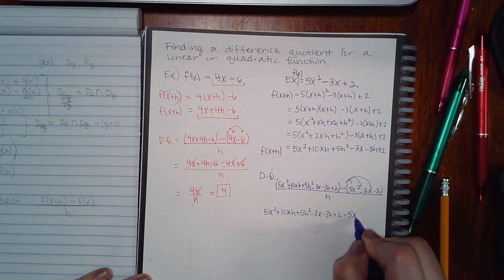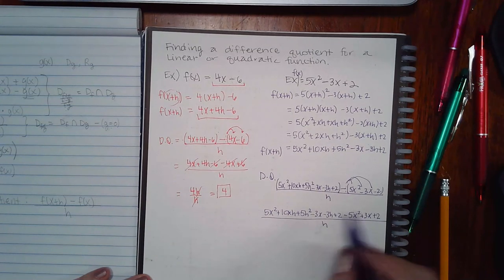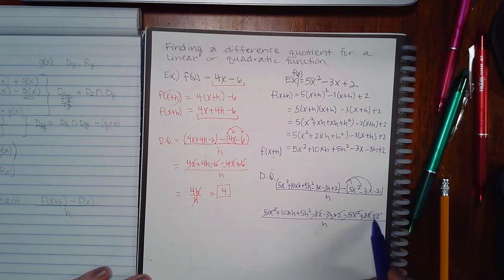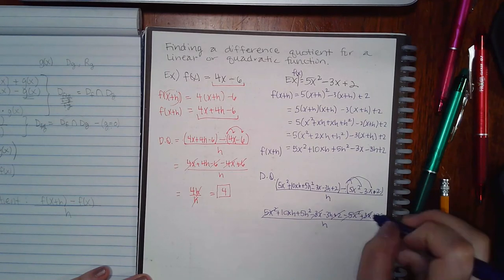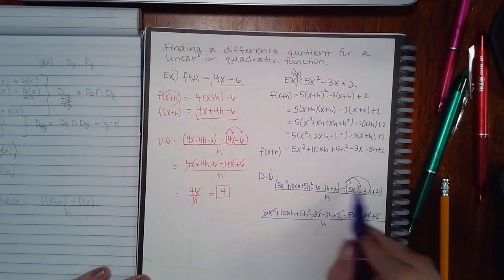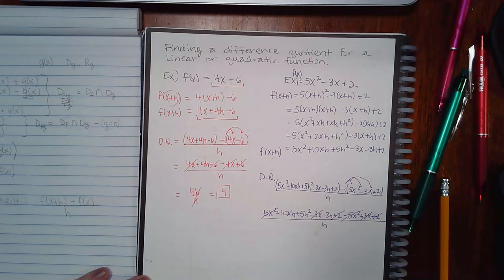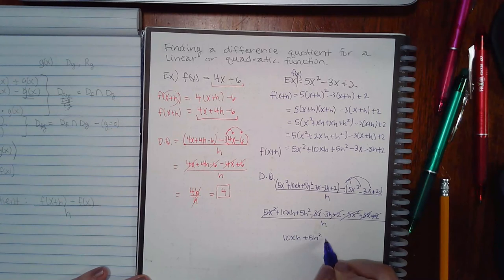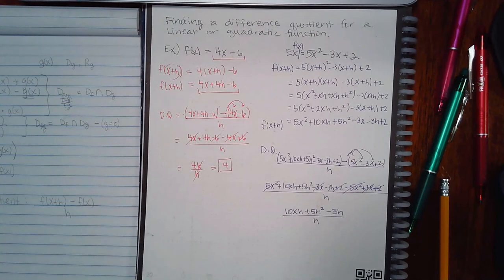So I get negative 5x squared, positive 3x and positive two. So then the 5x squared will cancel, the negative 3x and 3x will cancel, and the two, oh this should have been plus. So then it turns into a negative. Right, the original function had a plus. So when I distribute the negative, it'll become a negative. And then that negative will cancel with this positive. So what do I have left? I have 10xh plus 5h squared minus 3h all over h. Now, there are two ways you can simplify this.